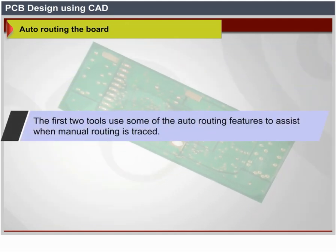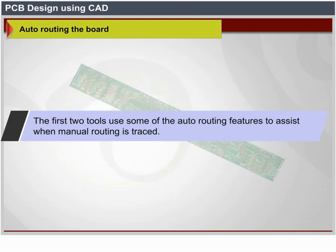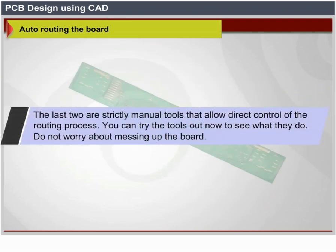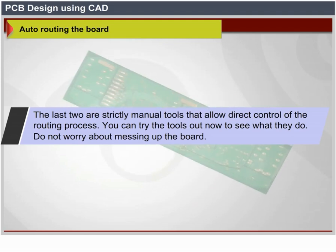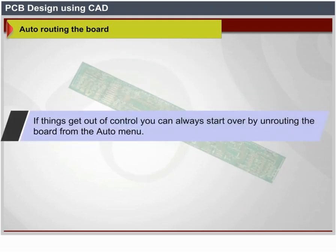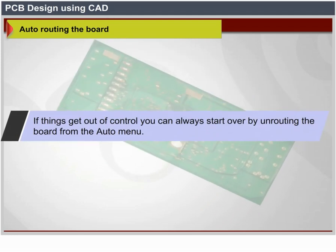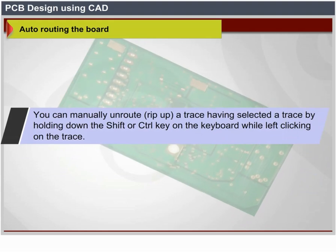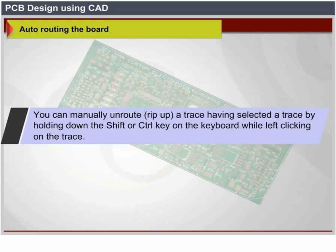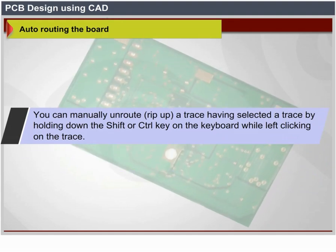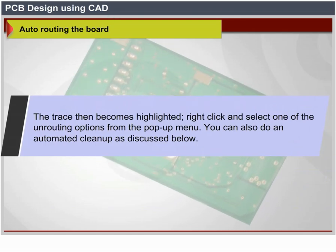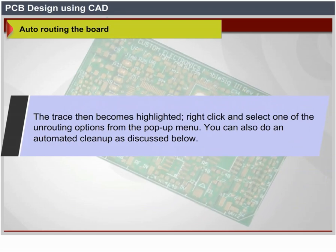The first two manual routing tools use some of the auto-routing features to assist you when manually routing traces. The last two are strictly manual tools and allow direct control of the routing process. You can try the tools out to see what they do — if things get out of hand, you can always start over by unrouting the board from the Auto menu. You can manually unroute or rip up a trace by selecting it while holding down the Shift or Control key and left-clicking on the trace; right-click and select one of the unrouting options from the pop-up menu.